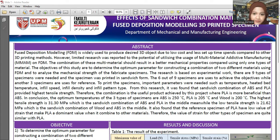The research is based on experimental work. There are nine types of specimens needed, printed in sandwich form. Six out of nine specimens are used to achieve the objectives, and the other three are reference specimens for comparison. To print the specimens, important parameters were needed such as temperature.